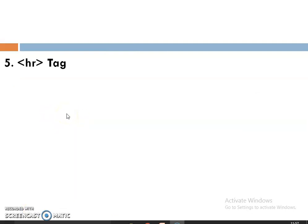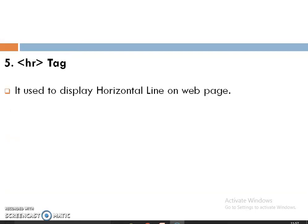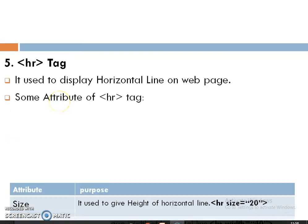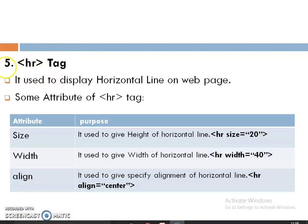The Horizontal Rule tag (HR) is used to display a horizontal line in a web page, very similar to the underline tag. Attributes of the HR tag: the size attribute gives the height of the line; the width attribute gives the width of the horizontal line; and the align attribute specifies the alignment of the line — center, left, or right.